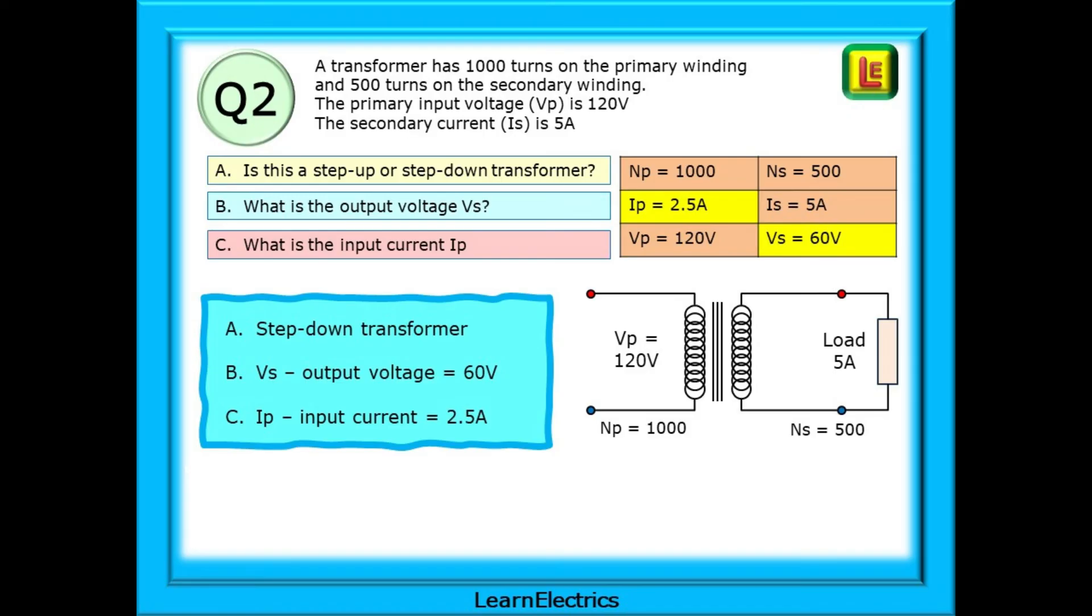The three answers are shown here together. Part A, it is a step-down transformer. Part B, VS the output voltage is 60 volts. And part C, IP the input or primary current is 2.5 amps.